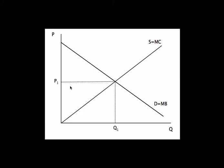As we saw when we did price controls, any price other than P1 is going to reduce the amount of total surplus, so we're at an efficient point by getting to that equilibrium — assuming that there aren't any costs and benefits not being reflected on this graph. Now we're going to change that assumption, and make the distinction between private cost and social cost.